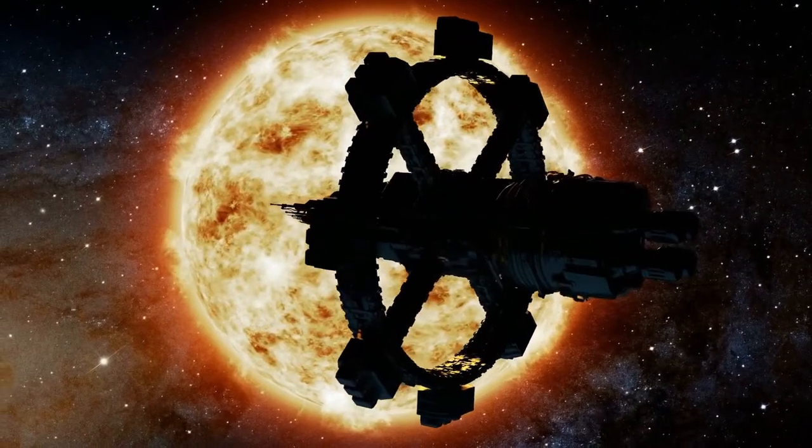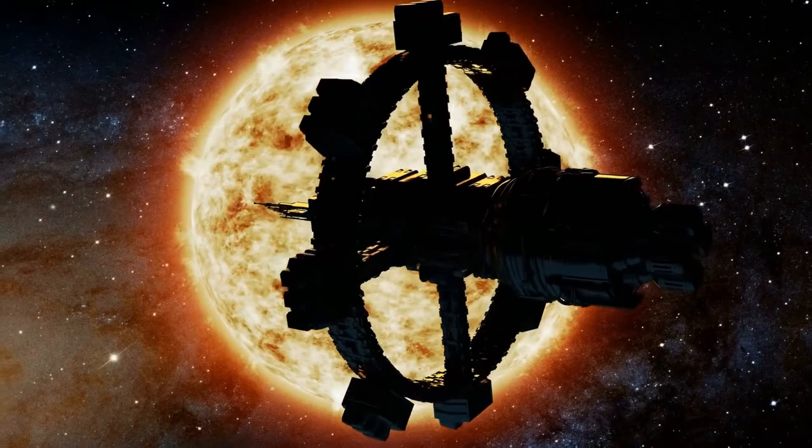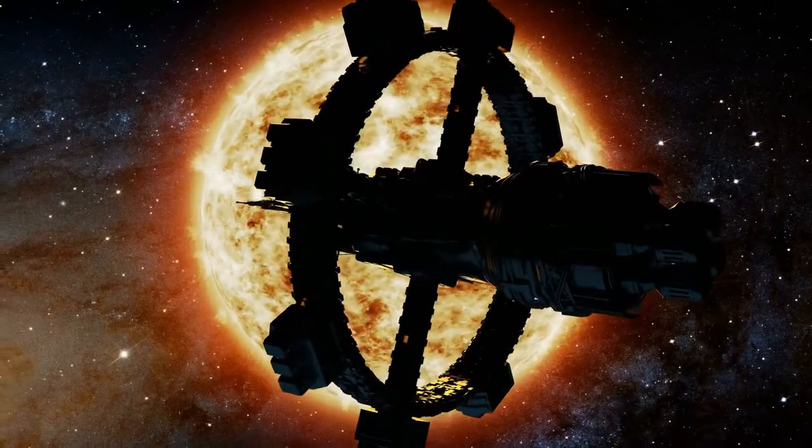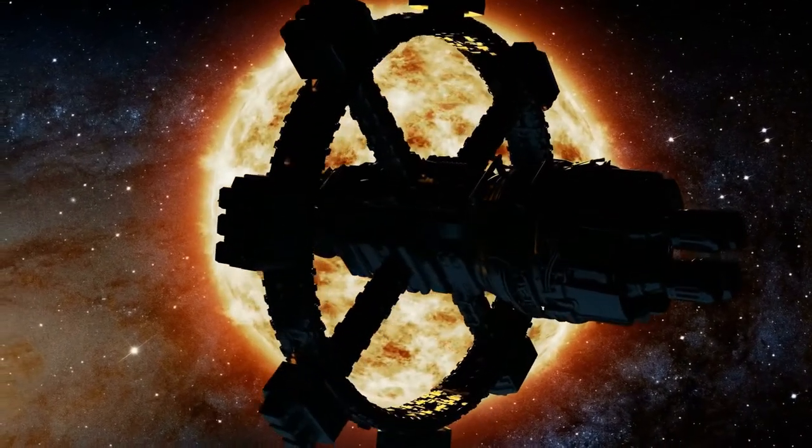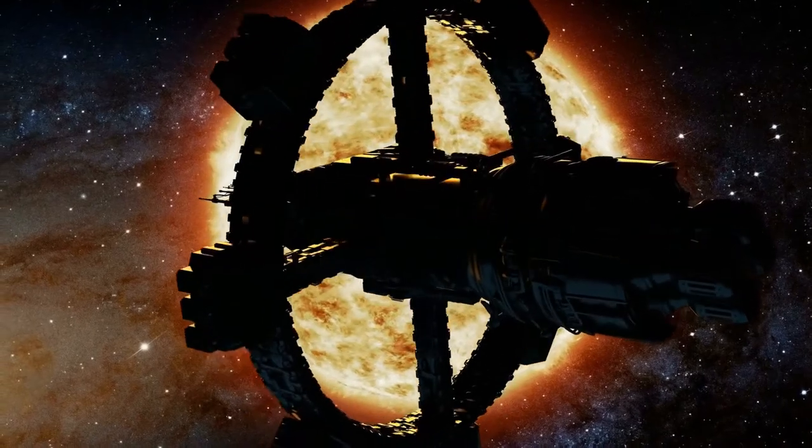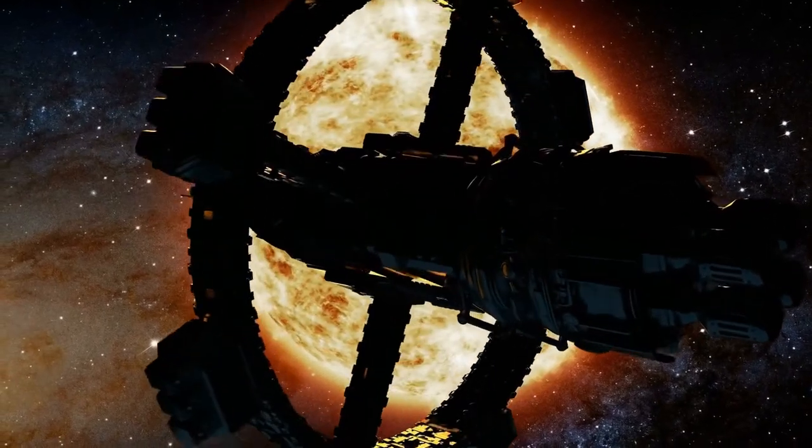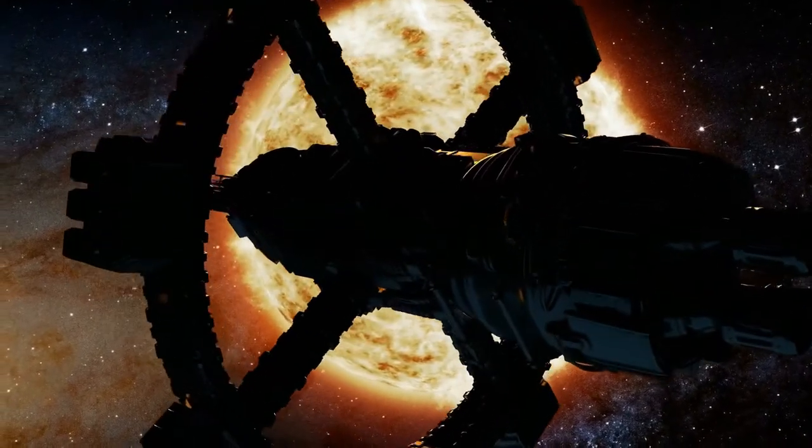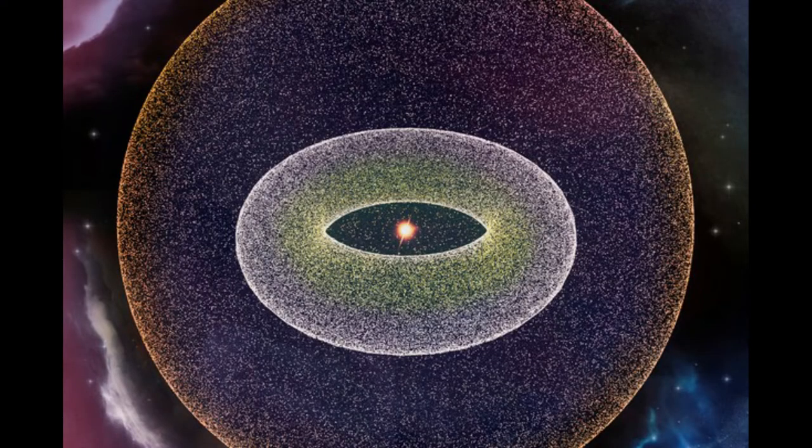This bubble is known as the heliosphere, and its edge, which is called the heliopause, marks a physical border where the solar system ends and interstellar space begins. Unlike most borders on Earth, scientists have no idea how big it is or what it looks like.